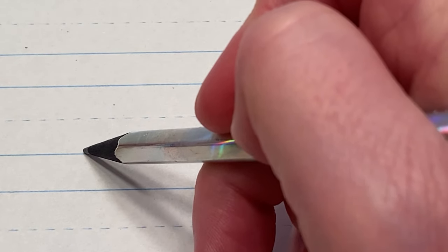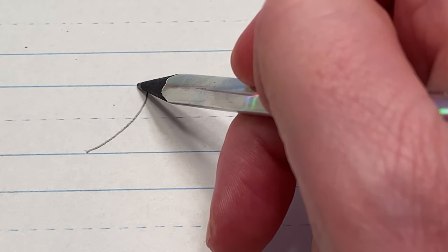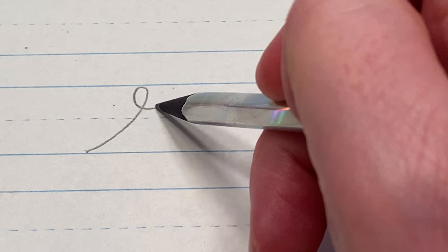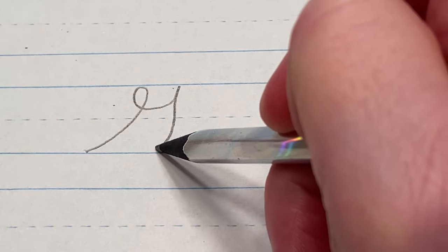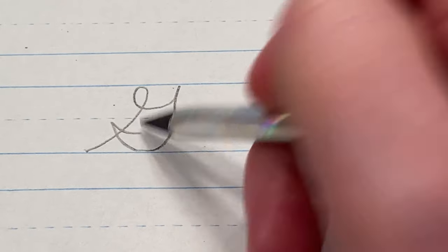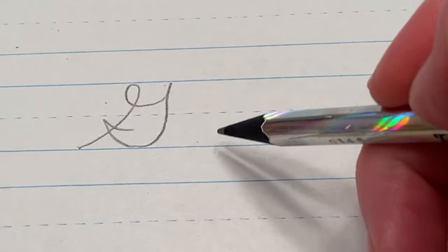For this one you start down at the floor, you slant up, loop back to the left, come up to a point at the ceiling, back and hook. You don't pick up your pencil the whole time you're making this letter.